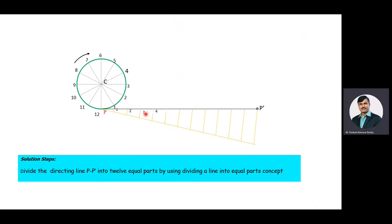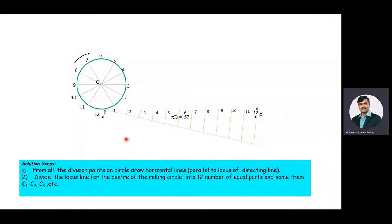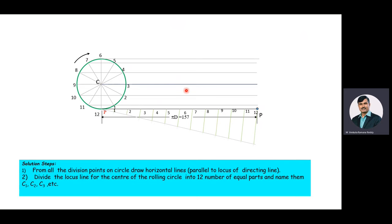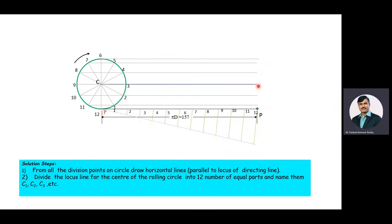Division points 1 through 12 are marked on the directing line. Then draw horizontal lines passing through the division points on the rolling circle. Also draw a line passing through the center of the rolling circle, parallel to the directing line — this line is called the locus of all center lines for the rolling circle.